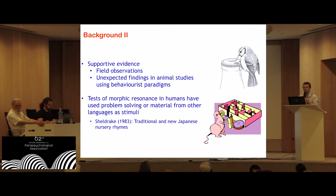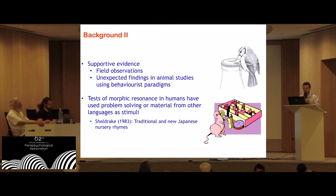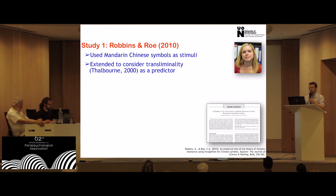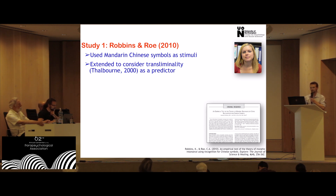He conducted one study where children were learning Japanese nursery rhymes, either traditional ones or novel ones produced for the study. The finding was that the traditional rhymes were remembered better than the novel ones. The explanation is that the morphic field generated and rehearsed with the traditional nursery rhymes explains why children learn them faster. However, there is a very nice alternative explanation in terms of rhyme or meter — the traditional nursery rhymes being more memorable than the novel ones. That's where, at the University of Northampton, we began to develop more sophisticated studies to test similar effects.